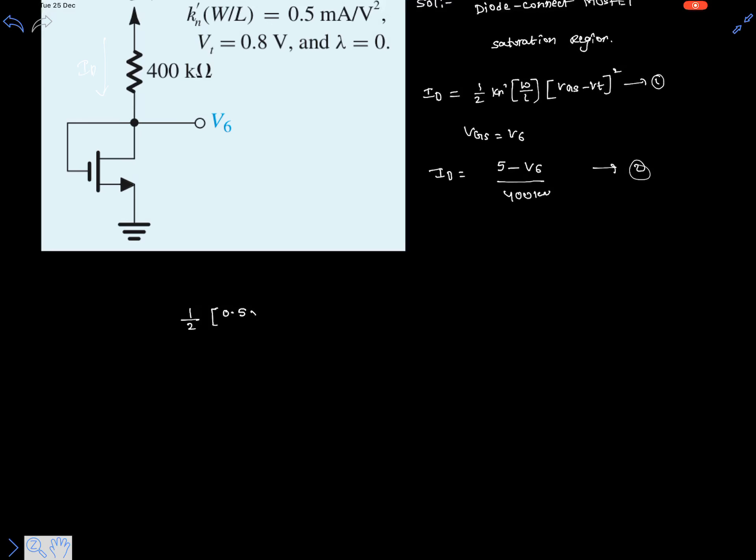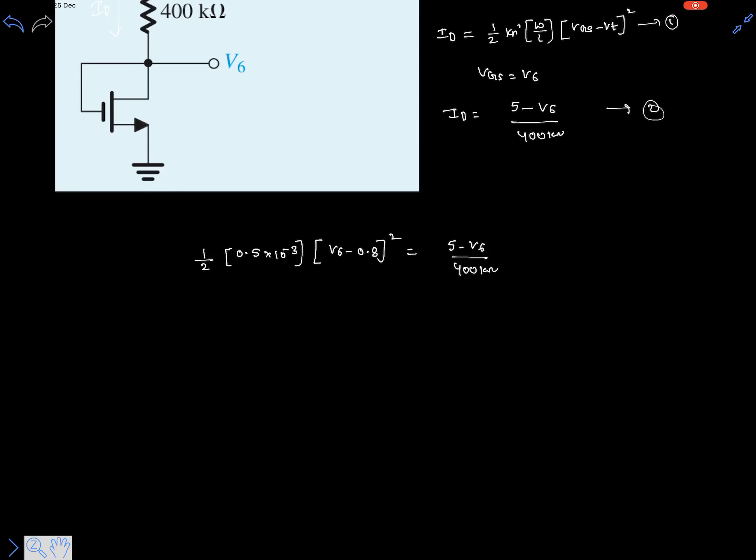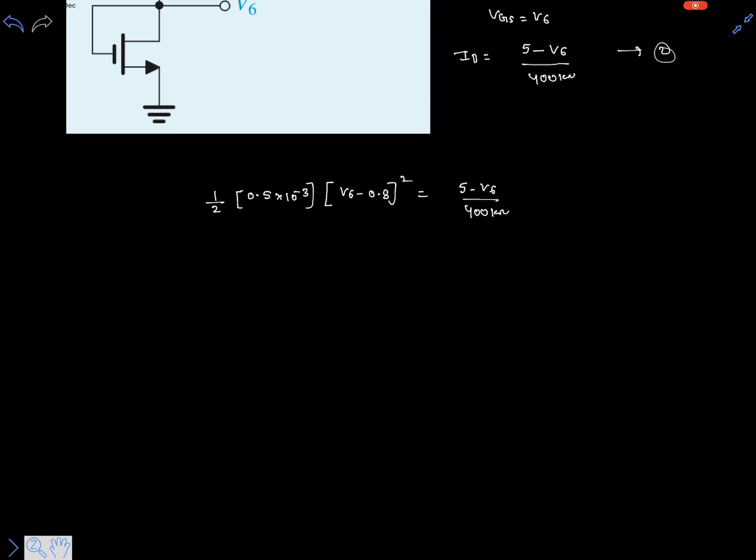Here it is half KN dash W/L term is given, that is 0.5 multiplied with 10 to the power of minus 3, and VGS minus VT is V6 minus 0.8 whole square, equals to 5 minus V6 over 400 kilo-ohm.